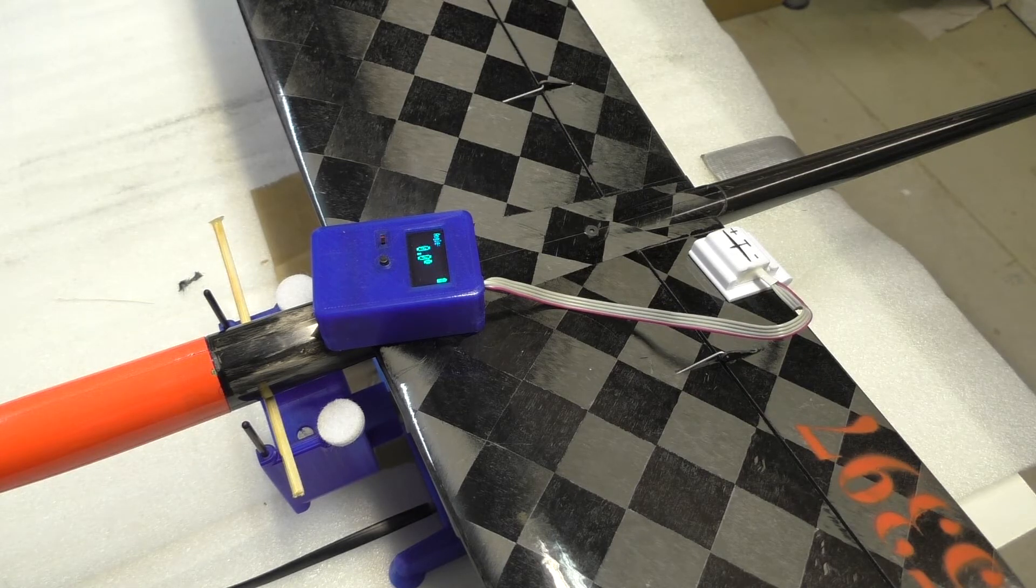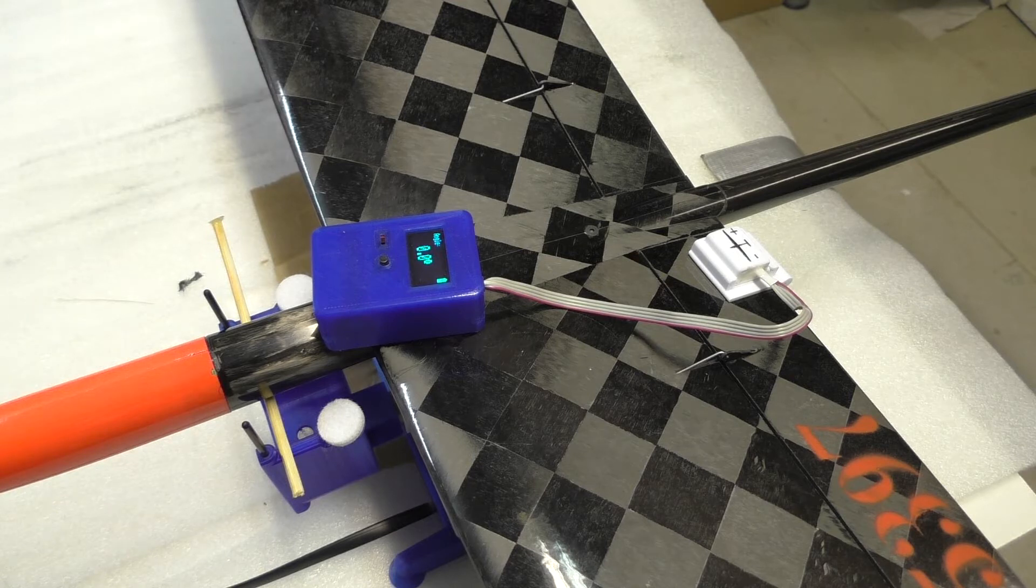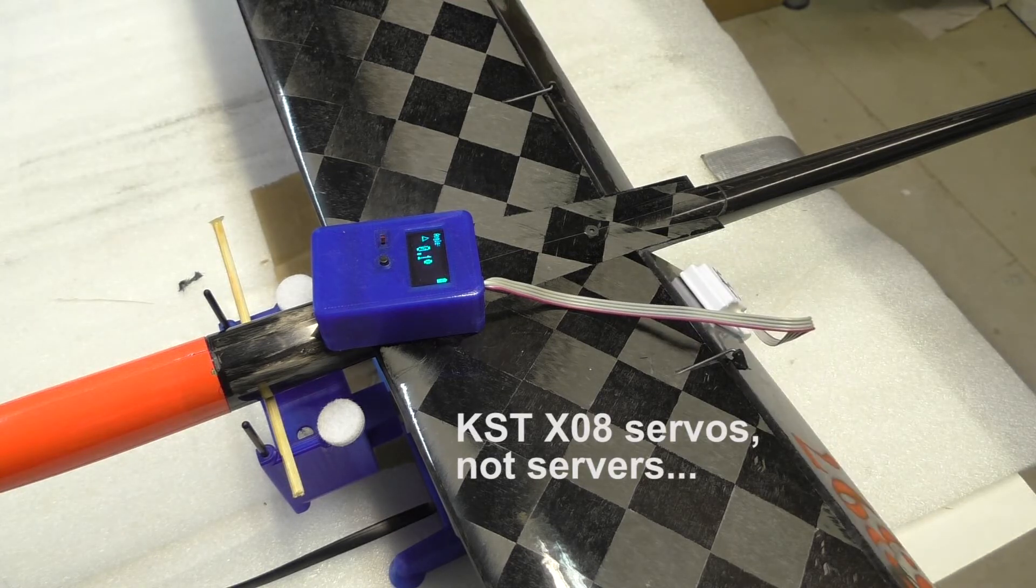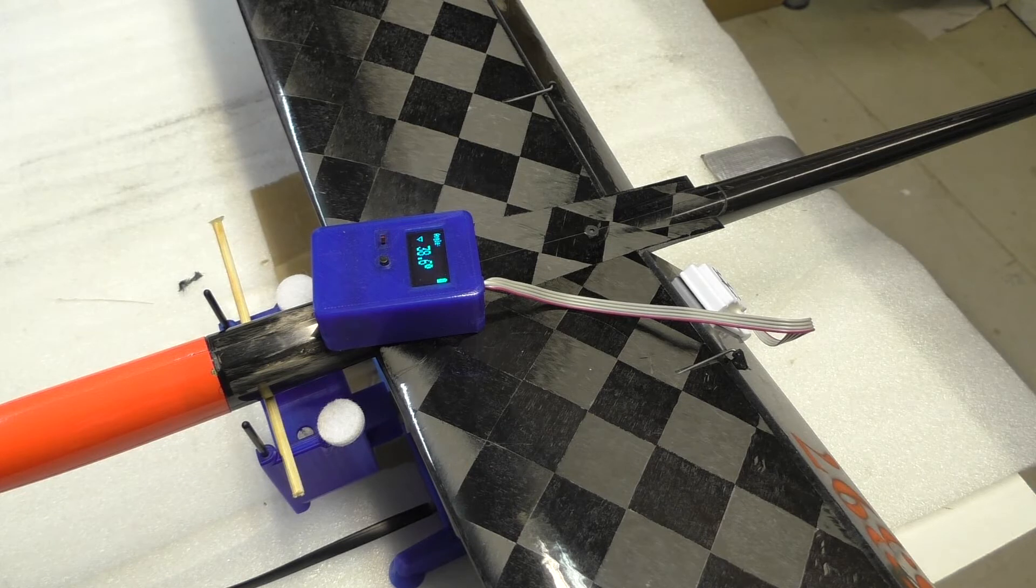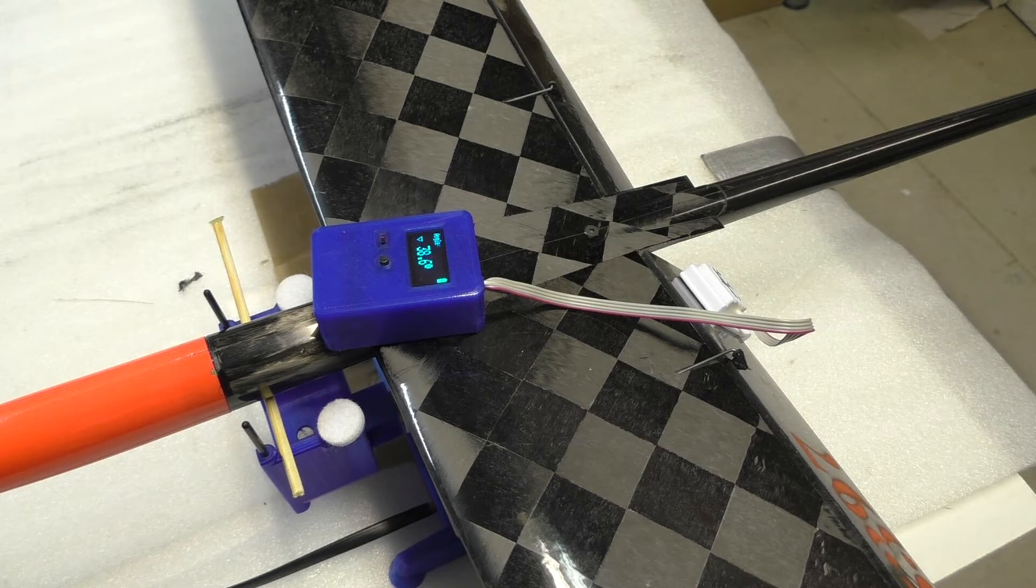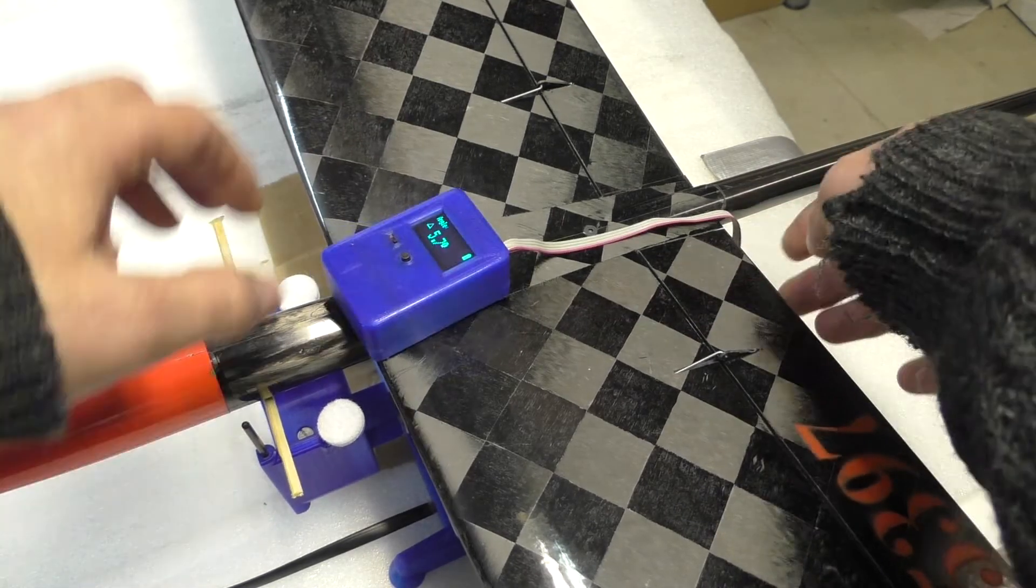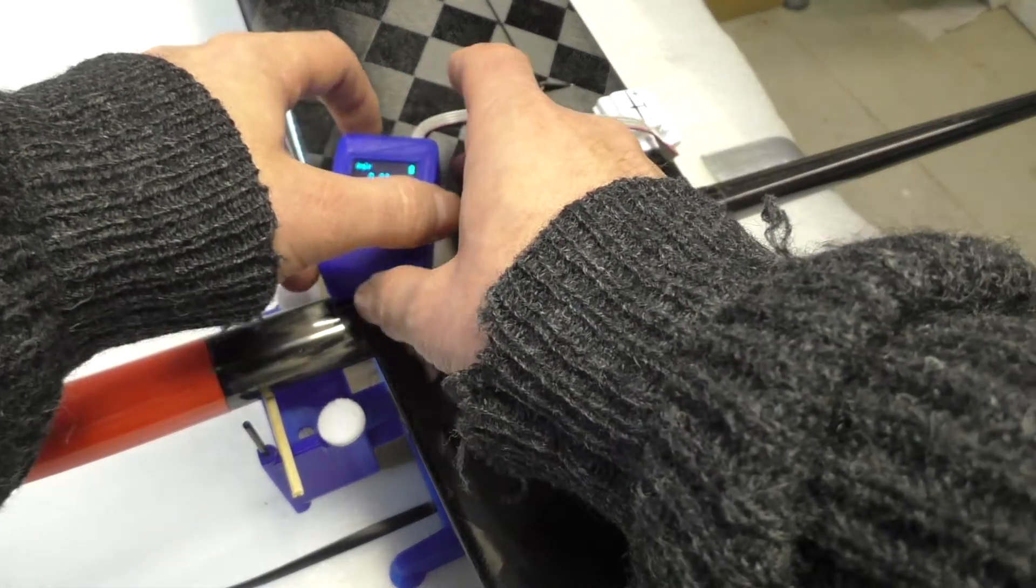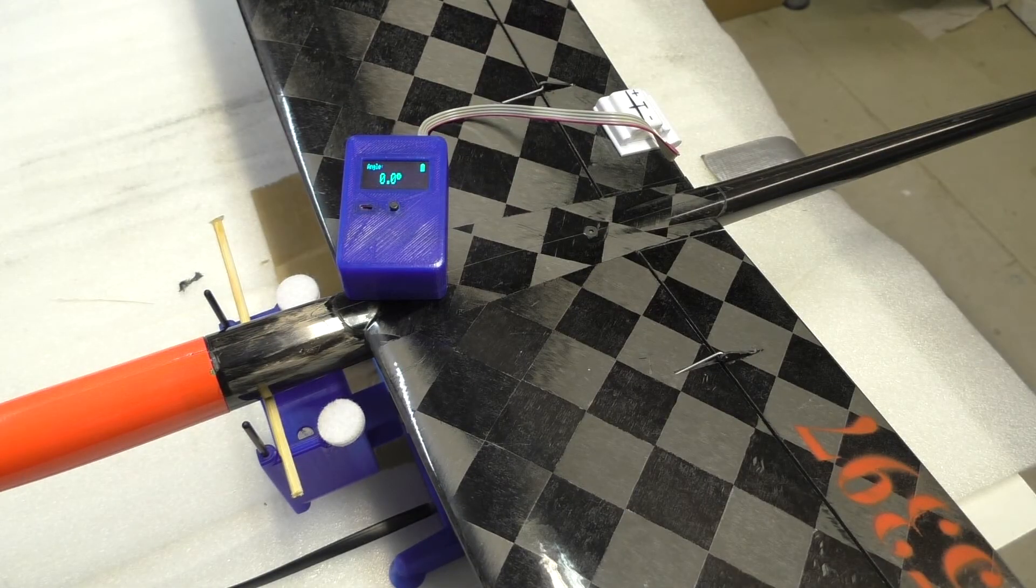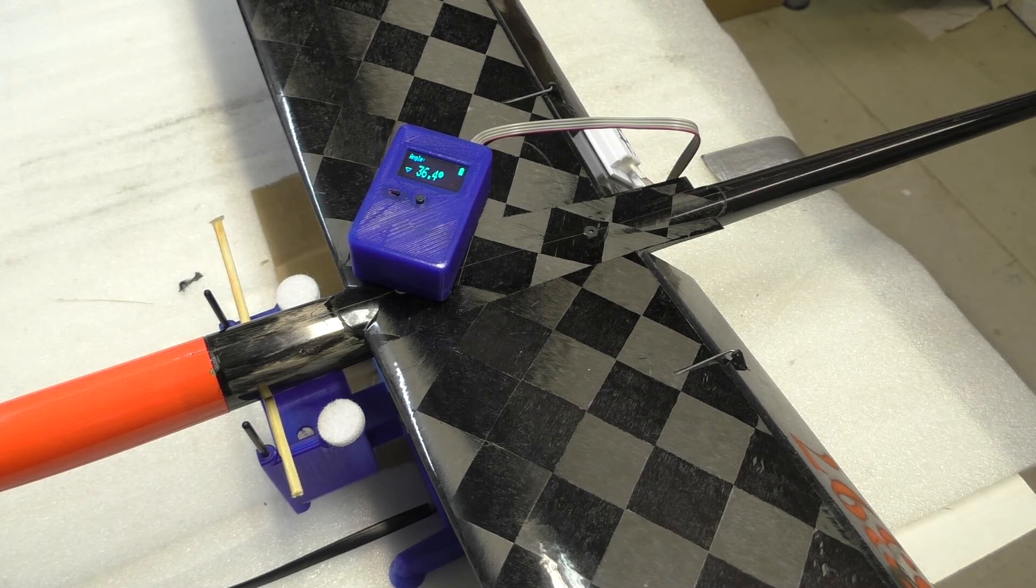Down to zero. I have X08 servos on here. So fairly accurate. Servos running on 2S. 38.6, 38.5, 38.6. Okay. So let's move it over to the other surface. 0.0. 36.4. Aha.